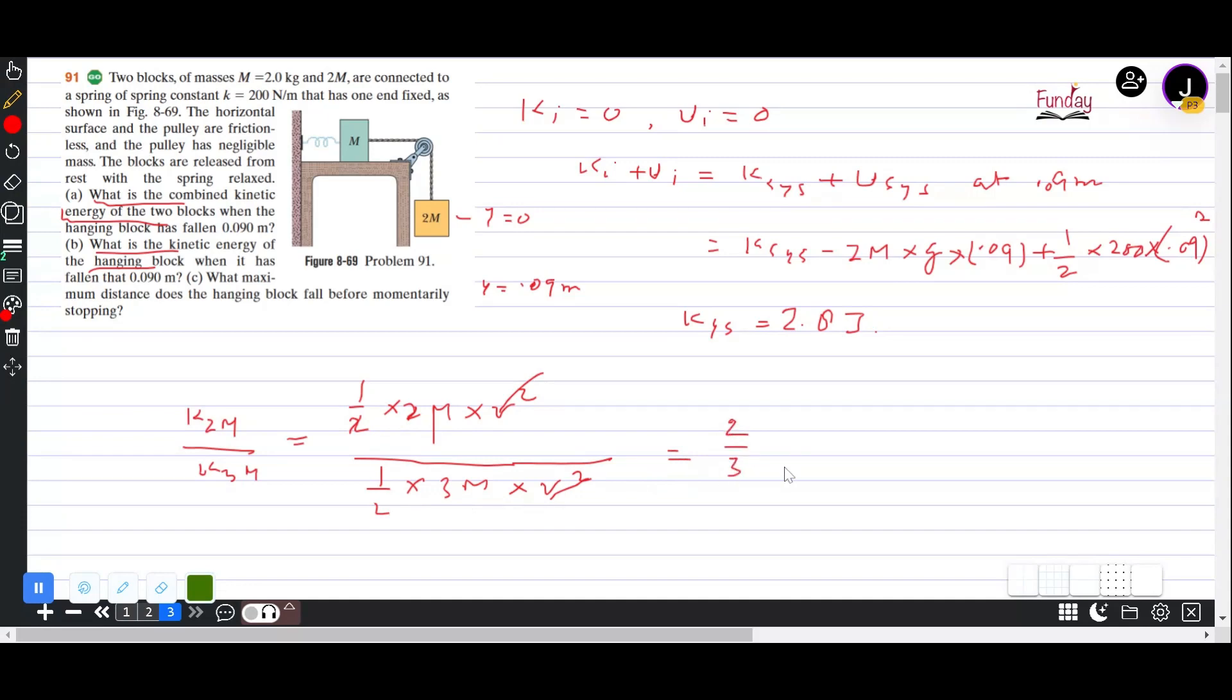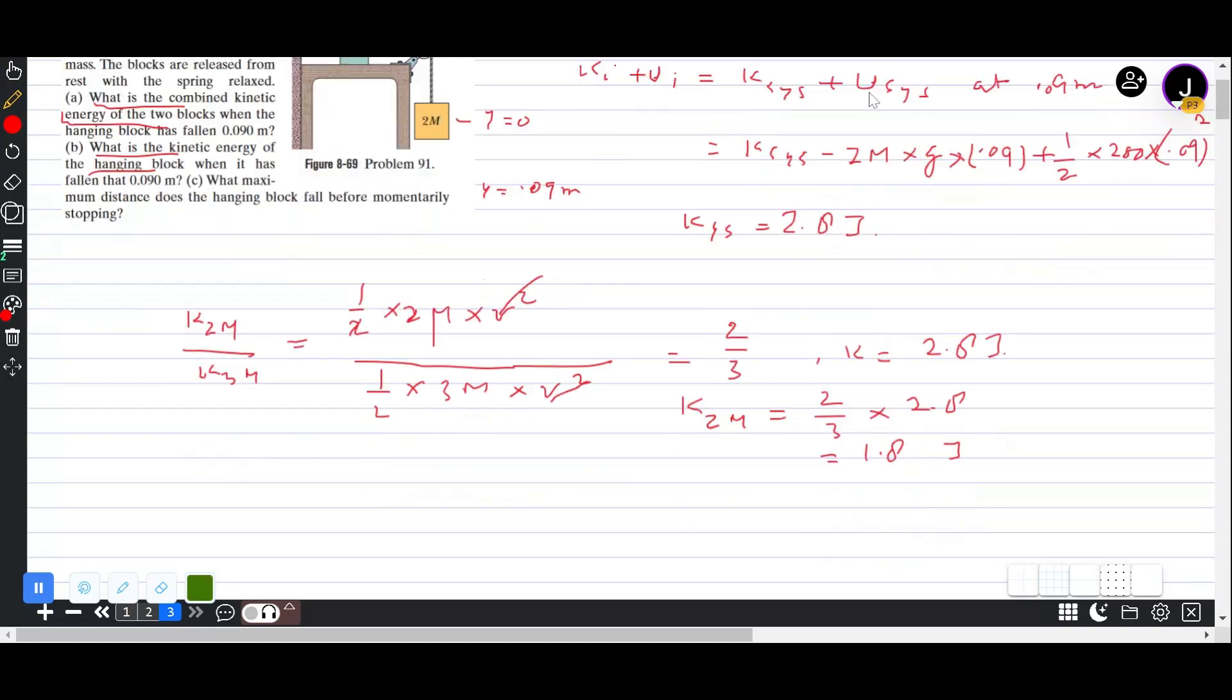And we have total kinetic energy at this point, that is 2.8 joules. So kinetic energy of 2M block is 2 over 3 into 2.8, that is 1.8 joules or something, right.